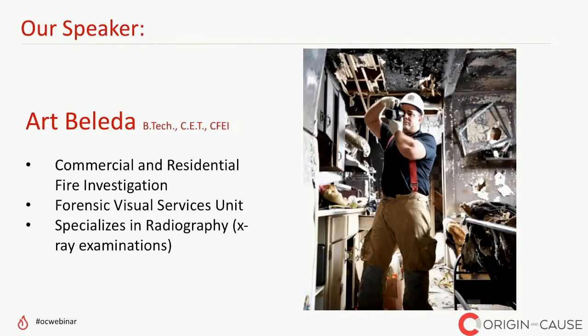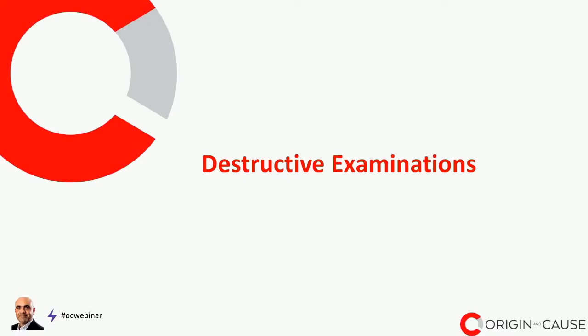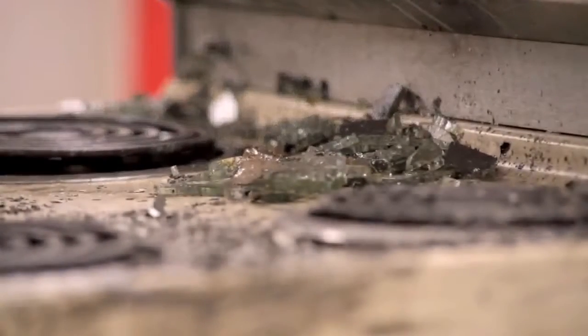Thank you, George. Welcome everyone — we're so glad to have you in our lab in Ancaster, Ontario. The topic of today's webinar is destructive examinations. We're going to go through a sequence of events showing how a piece of equipment such as an electric range is examined in the lab. We have live footage from an actual fire incident which occurred in Kingston, Ontario in May of 2016, and it gives you an appreciation for how a fire develops and causes the damage noted to this piece of equipment.